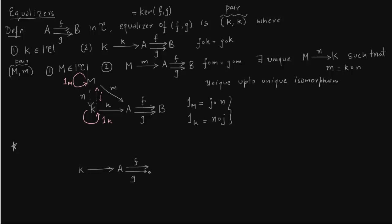Now, if in a category C we have two arrows F and G and an equalizer k, then k is a monomorphism. To show this, draw two arrows U and V going into K. We are given that k∘U = k∘V and we need to show U = V. We can already see we are going to use uniqueness.